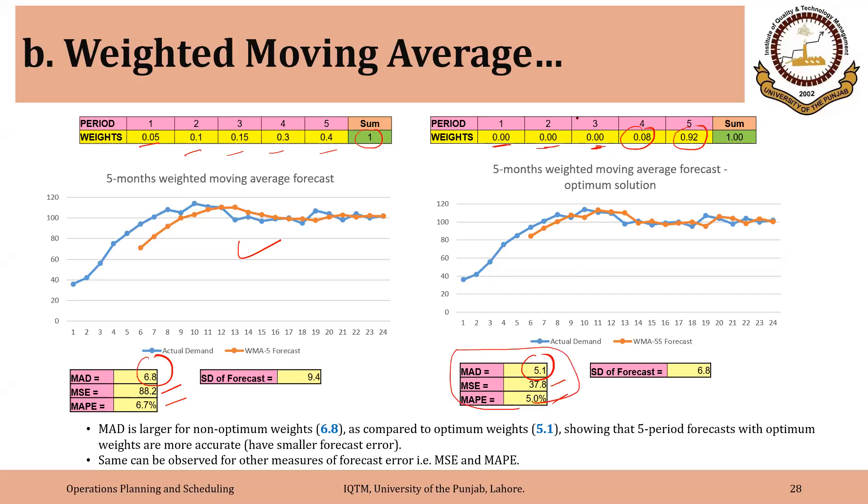For example, you can assign weights to be, say, you make it 0.05 and you make it 0.95 or you assign any combination of weights, you will never find errors smaller than this. So this is the optimum solution. These are the optimum weights. Error cannot be reduced further. So this is something you should keep in mind. Now, if you have any questions, you can ask.